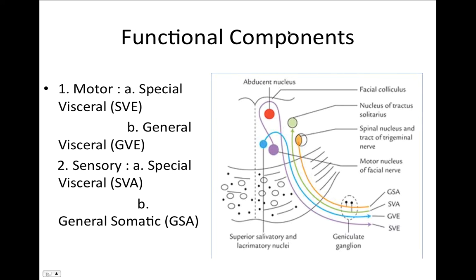Coming to the functional components: amongst the motor components we have the special visceral efferent (SVE), shown in purple, coming from the motor nucleus. We also have the general visceral efferent (GVE), shown in blue, coming from the superior salivatory and lacrimatory nuclei — this innervates the glands. For sensory components, the special visceral afferent (SVA), shown in green, goes to the nucleus tractus solitaris and deals with taste perception. We also have the general somatic afferent going to the spinal nucleus and tract of the trigeminal nerve.